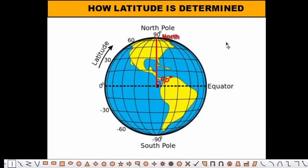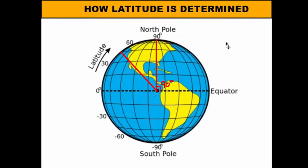For any other latitude line, you draw a line from that point down to the center of the earth and use a protractor to measure the angle. For example, a line that cuts the 90-degree angle in half gives 45 degrees, placing that spot at 45 degrees north latitude — because it's north of the equator.